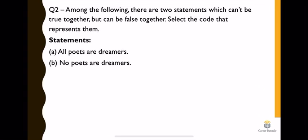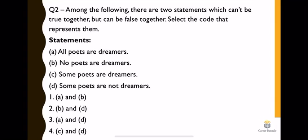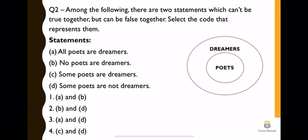Question second: among the following, there are two statements which can't be true together but can be false together. Select the code that represents them. We need to find two statements that cannot be true together but can be false together. The statements are: all poets are dreamers, no poets are dreamers, some poets are dreamers, and some poets are not dreamers. We will solve this using syllogism. For example, all poets are dreamers means we draw two circles - dreamers circle is bigger and poets circle is inside the dreamers circle.